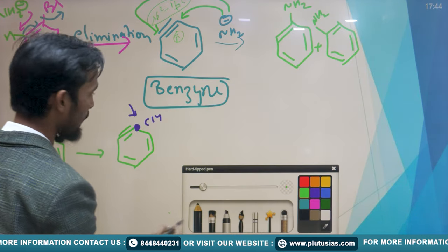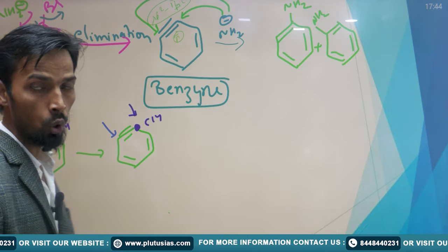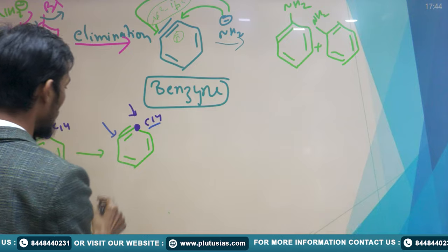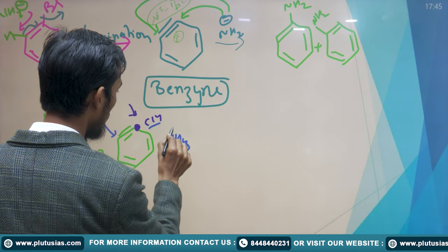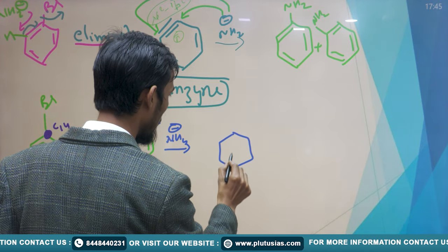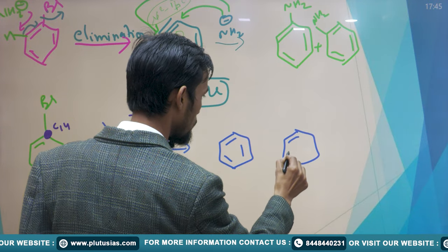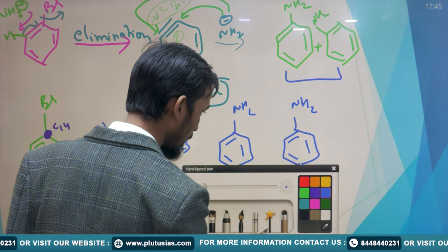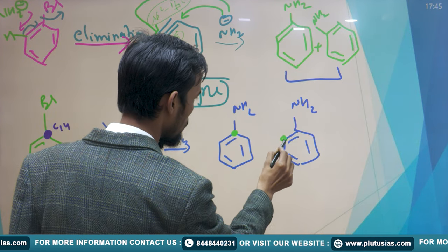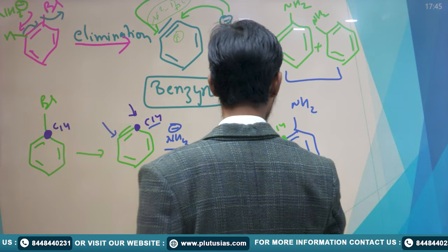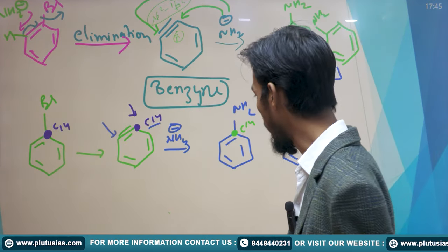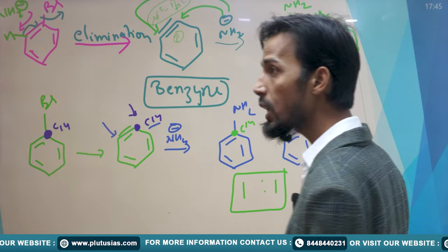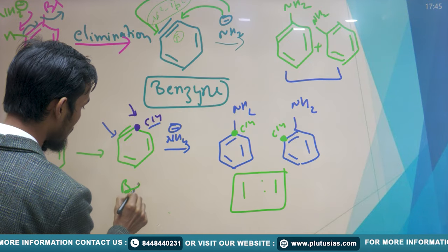When NH2⁻ attacks, there are two possibilities: it can attack at the labeled carbon-14, or at the adjacent carbon-12. This gives two different aniline products distinguishable by isotope position. During the experiment, if we obtain these two products in an equal 1:1 ratio, that is only possible if the reaction proceeds through the benzyne intermediate via the elimination-addition pathway.